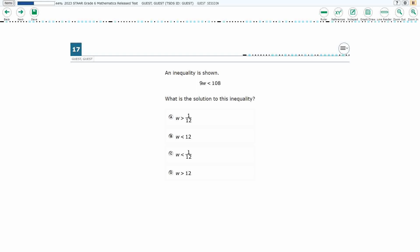So we have this basic inequality here, 9w is less than 108. So what does that mean, and how can we necessarily use that? So what do we have? We've got a 9w, right?